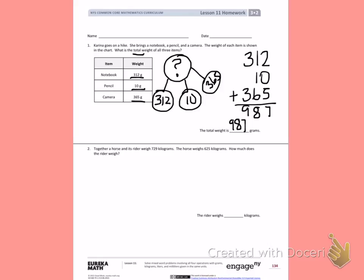Well, we know in total they both weigh 729 grams. The horse by itself weighs 625 grams. We want to find out how much the rider weighs. So that means I know my total this time, which is 729 kilograms. The horse weighs 625 kilograms. I want to find out how much the rider weighs.